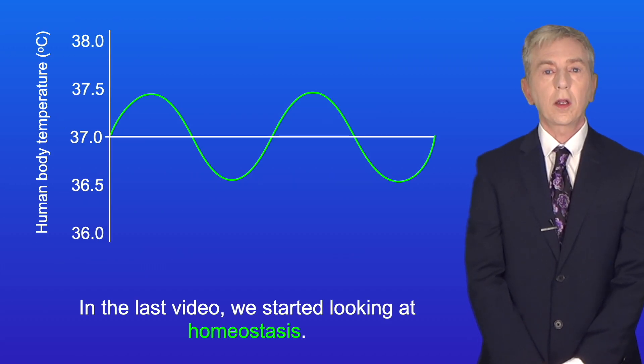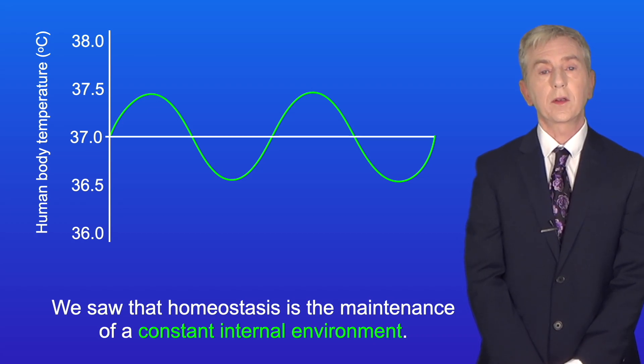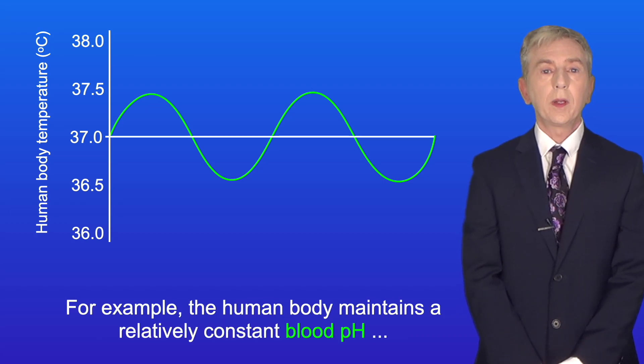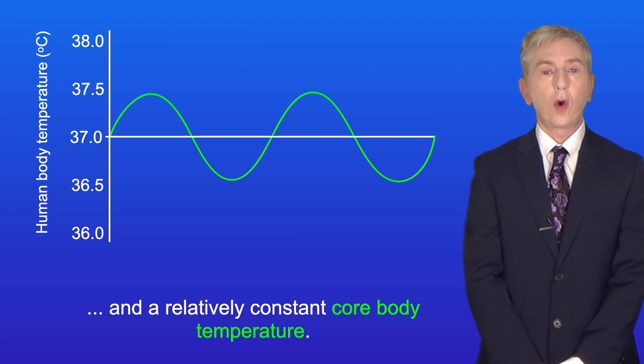In the last video we started looking at homeostasis and we saw that homeostasis is the maintenance of a constant internal environment. For example, the human body maintains a relatively constant blood pH, blood glucose concentration, and core body temperature.